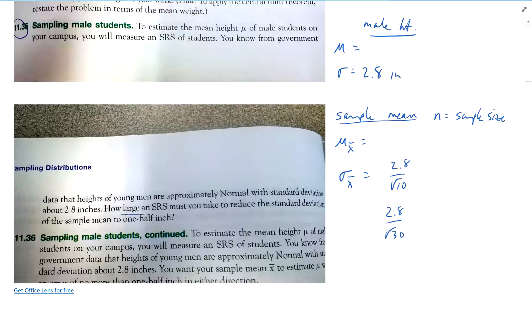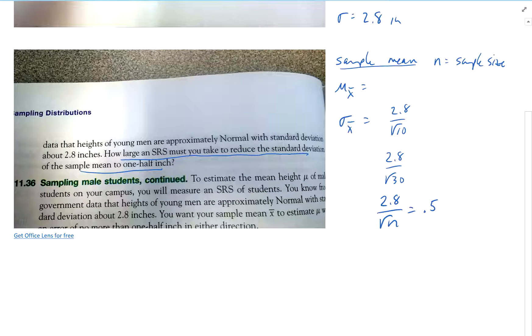How large of a random sample must we take to make the sample mean 1 half inch? In other words, 2.8 over the square root of n must be 0.5. So we've got to figure out what n is for that.